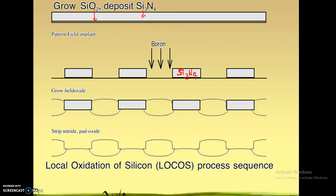How is this carried out? The first thing we do is take the silicon substrate. On the substrate we grow a thin layer of pad oxide. It is called a pad oxide because it acts as a padding between silicon nitride and the silicon substrate.